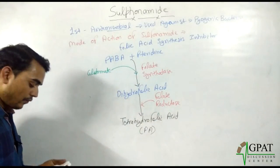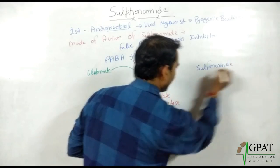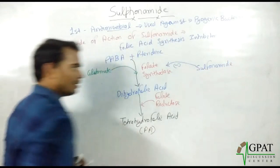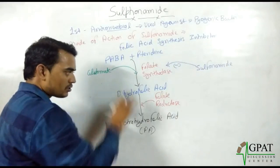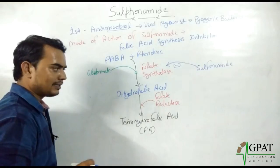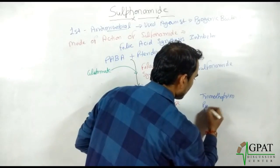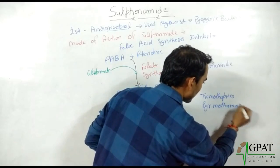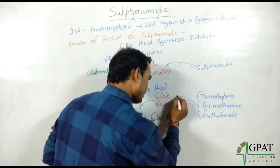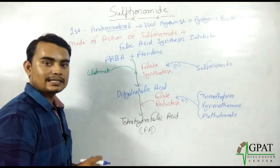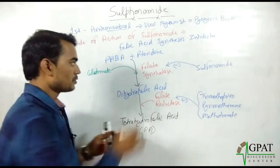All sulfonamides inhibit the enzyme folate synthetase, thereby inhibiting the synthesis of folic acid. In contrast, other drugs — trimethoprim, pyrimethamine, and methotrexate — inhibit the folate reductase enzyme. So sulfonamide inhibits folate synthetase while these three drugs inhibit folate reductase.